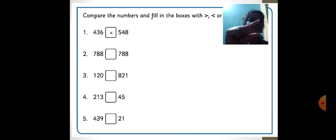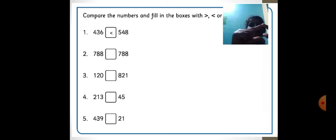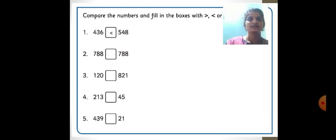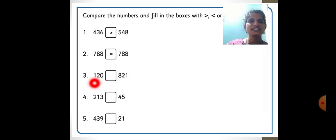The bigger side, you can see the open mouth. The smaller side, you can see the closed mouth — the mouth will be open towards the bigger side. Second example: 788 and 788. Both numbers are equal, so the symbol is equal. Third: 128 and 821. In the hundreds place, here is 1 and here is 8. 8 is the biggest number.